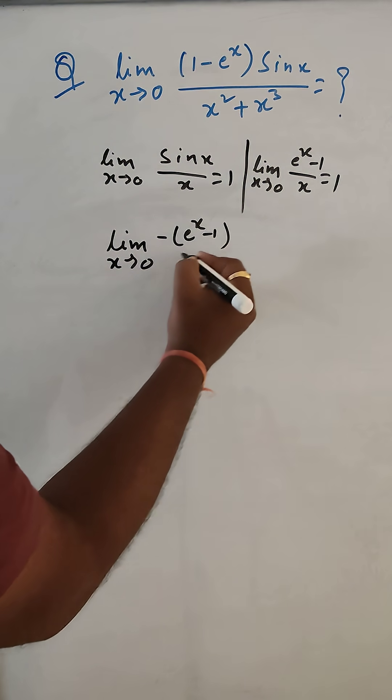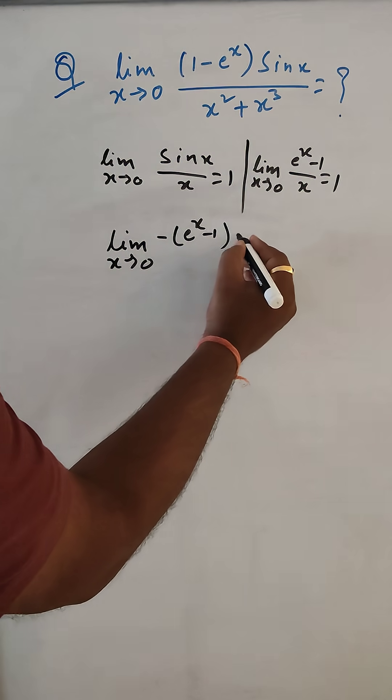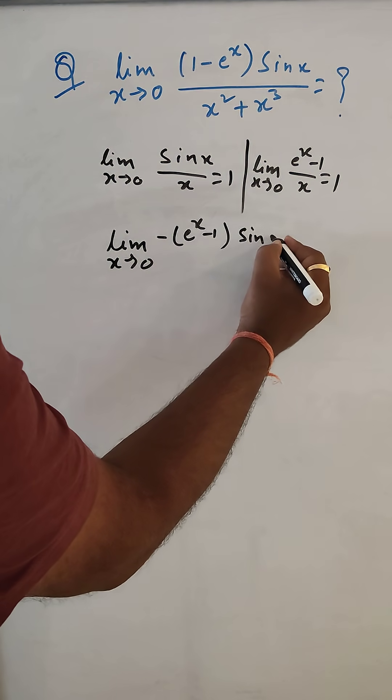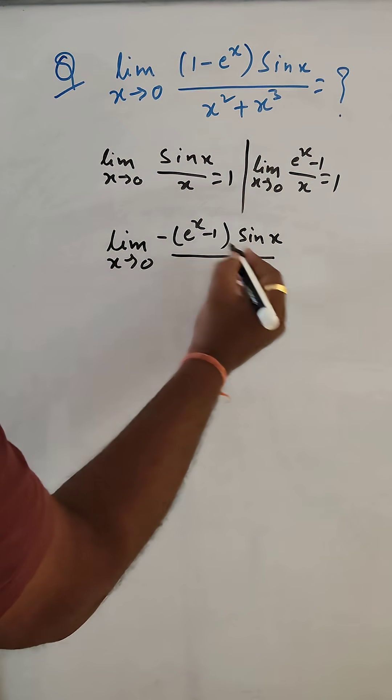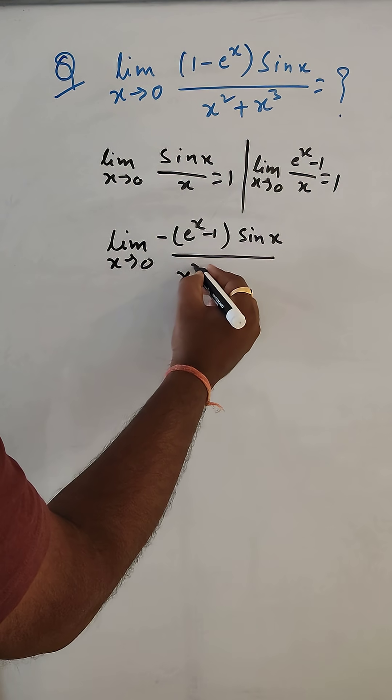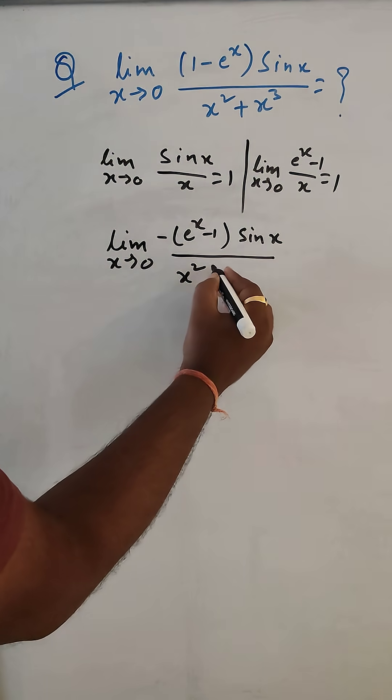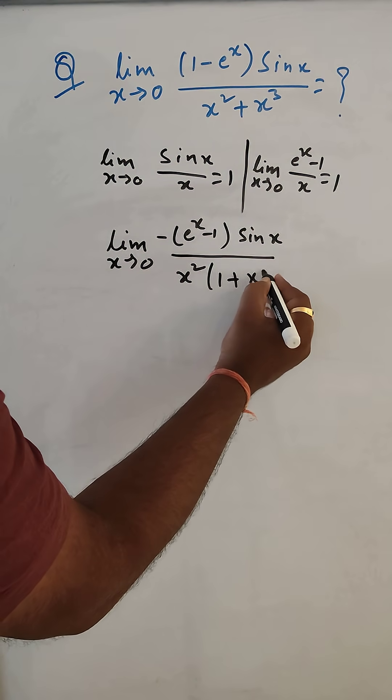So here we can do like this: e to the power x minus 1. Now sin x. And here we can take x square common, giving 1 plus x.